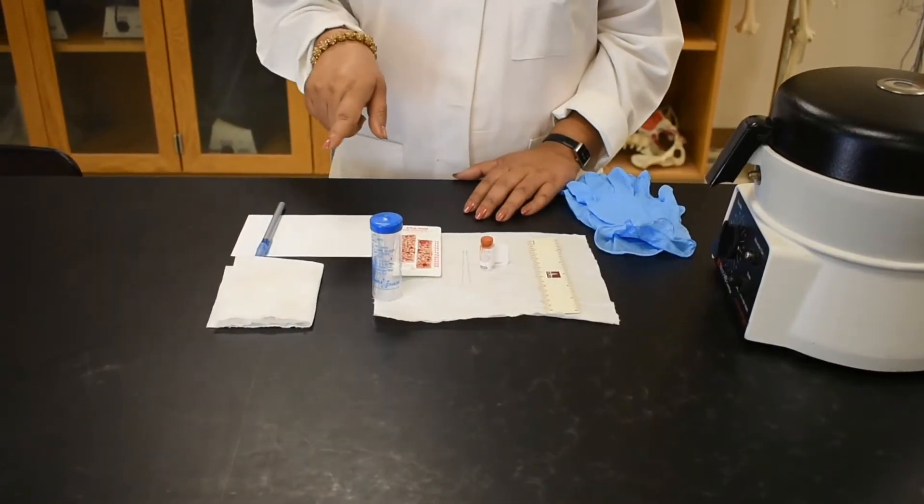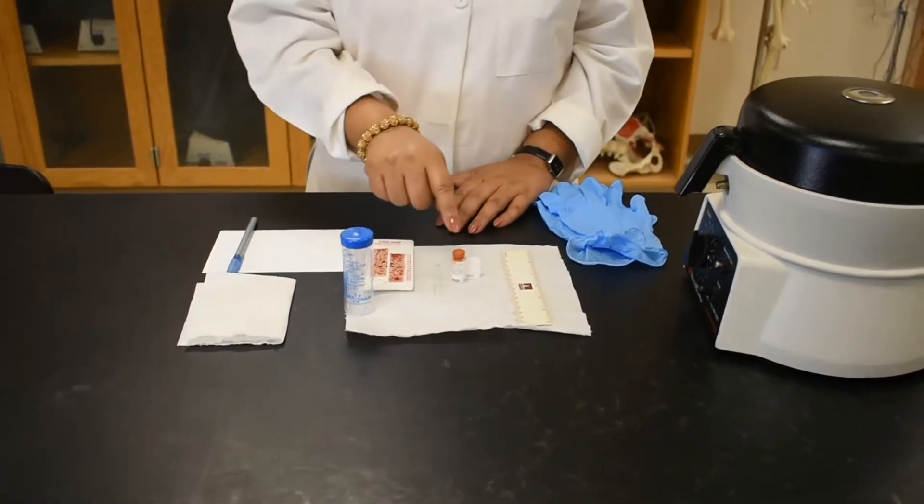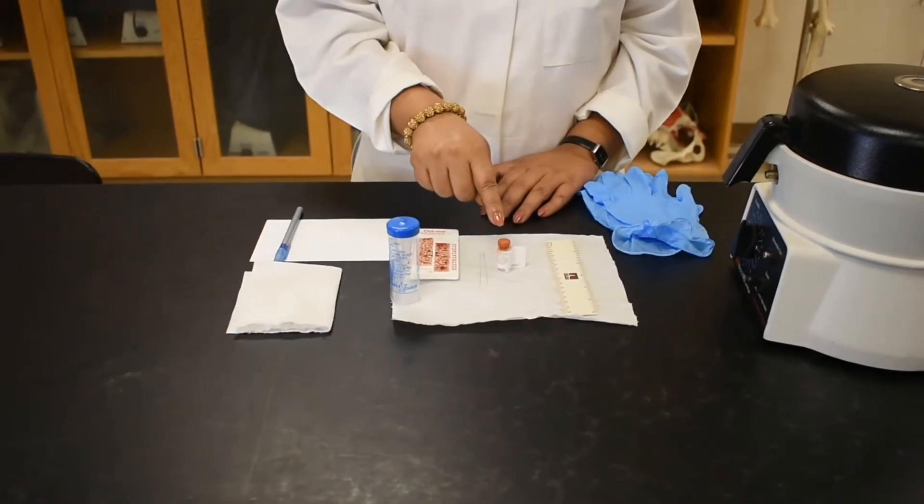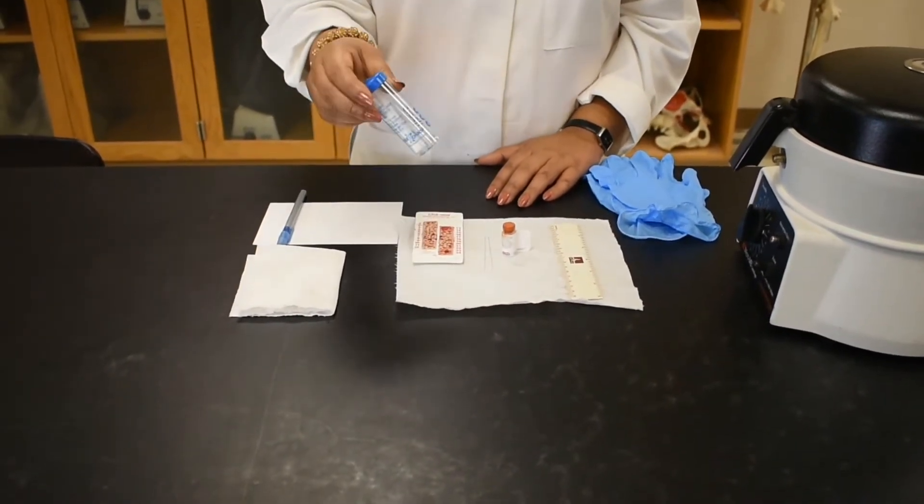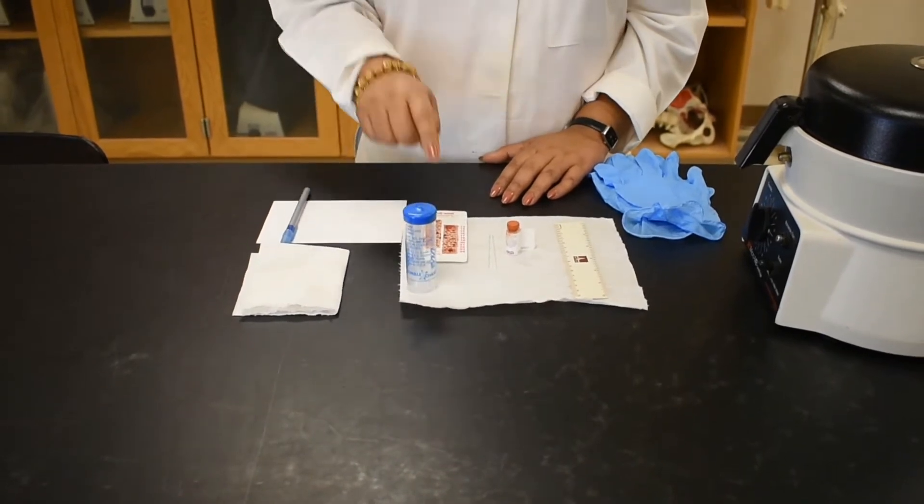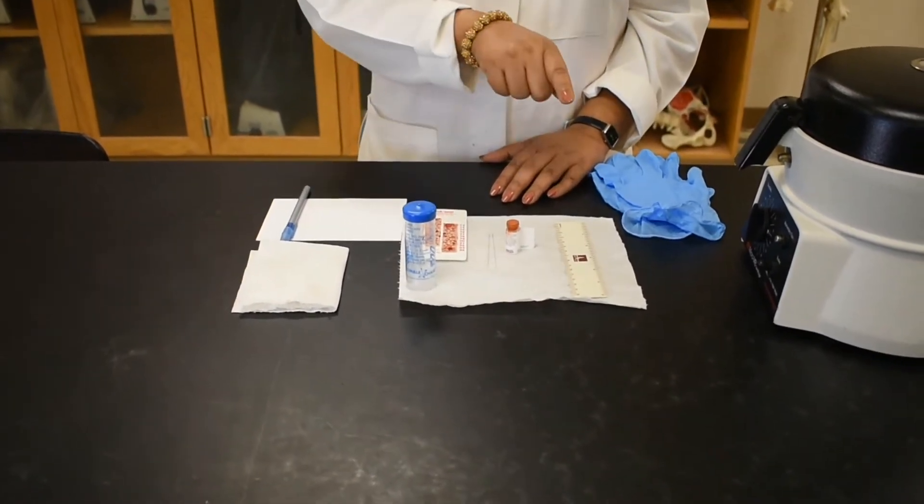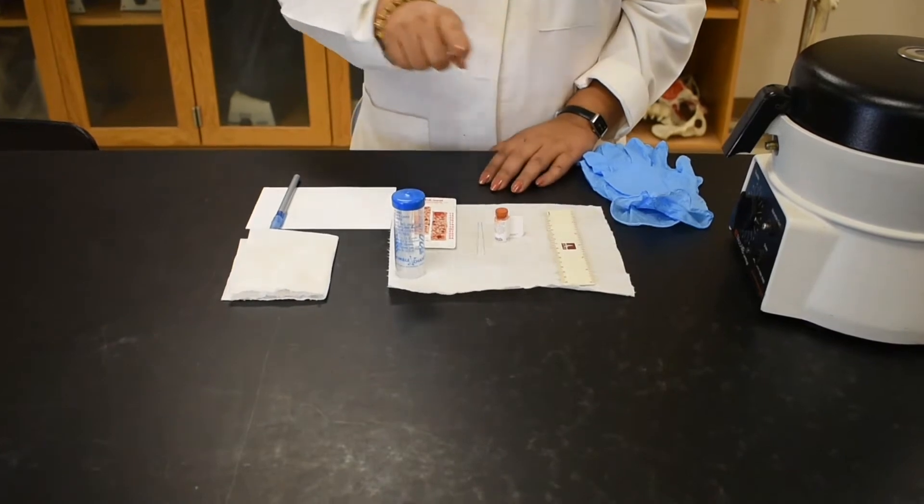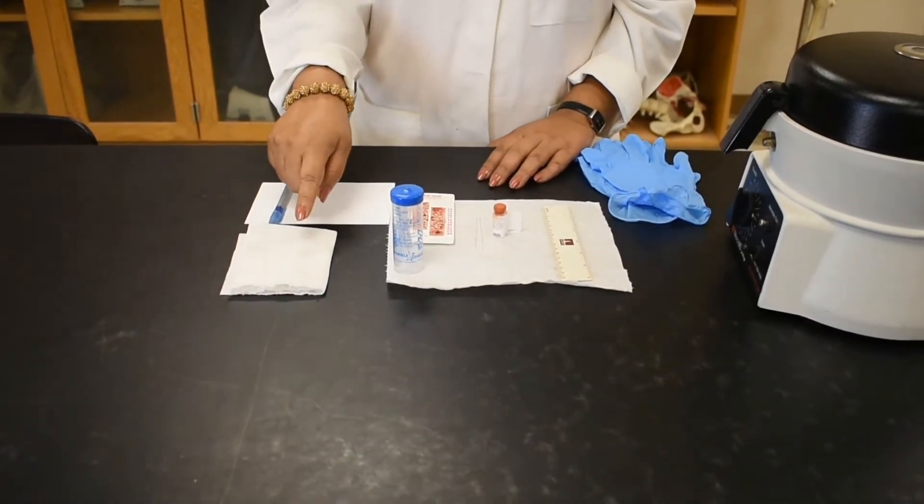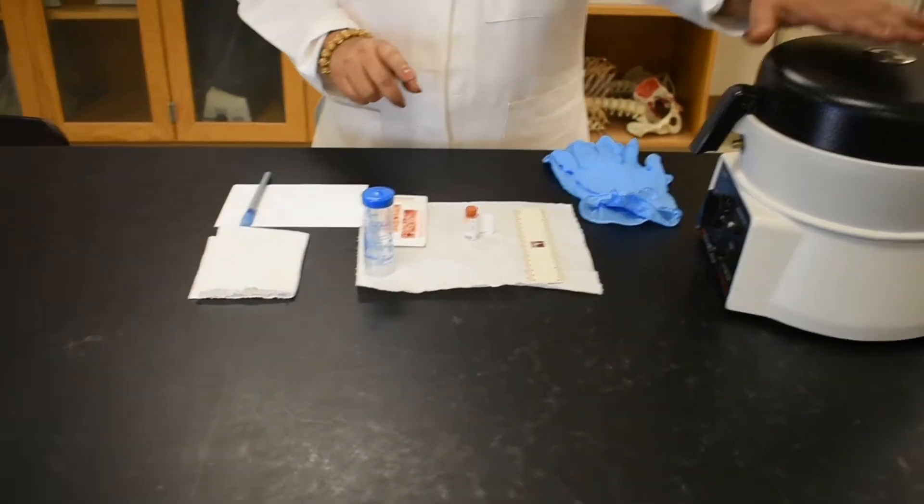These are all the materials we will need for the experiment. We need blood sample, capillary tube, a sealant, a ruler, an extra paper towel, and a micro centrifuge.